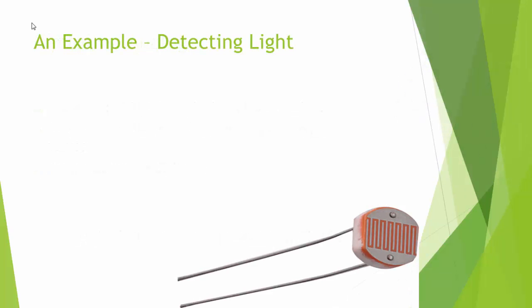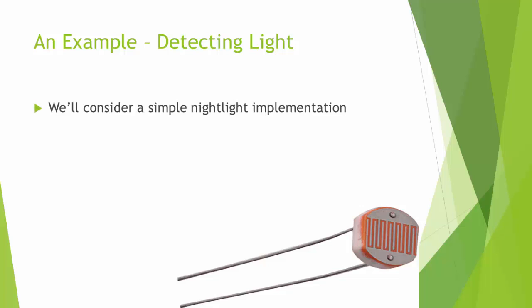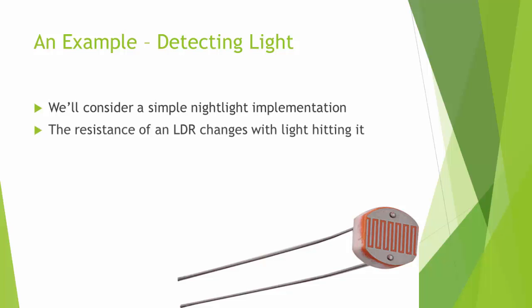The analog sensor we're going to use for a digital output is a light-dependent resistor, or LDR. It has a high resistance when light is not hitting it — high resistance in the dark — and a low resistance in the light. You can even take a multimeter and do experiments to see how that works. What we're going to do today is implement a simple nightlight using this phenomenon: the resistance of the LDR changes when light hits it, and we'll use the Arduino input pins to detect light.